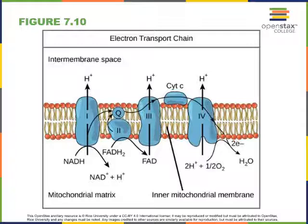As NADH is oxidized to form NAD+ and a hydrogen ion H+, hydrogen ions are pumped across the inner mitochondrial membrane, out of the mitochondrial matrix into the intermembrane space. For each NADH that becomes oxidized to NAD+, we pump 4 hydrogen ions out of the mitochondrial matrix into the intermembrane space.